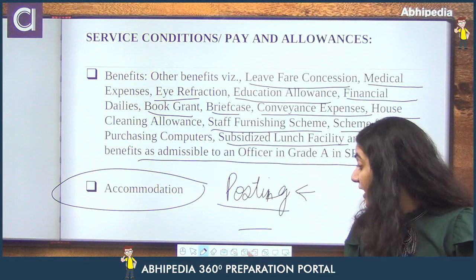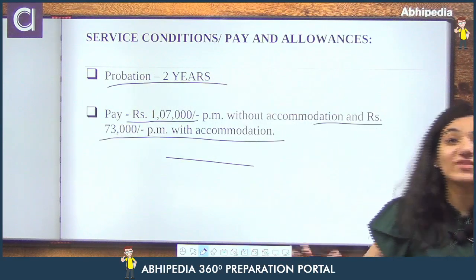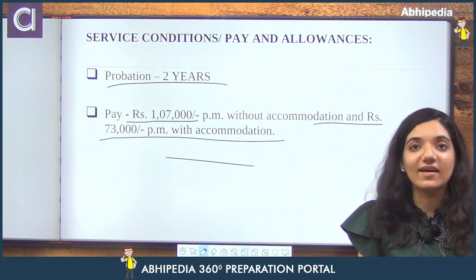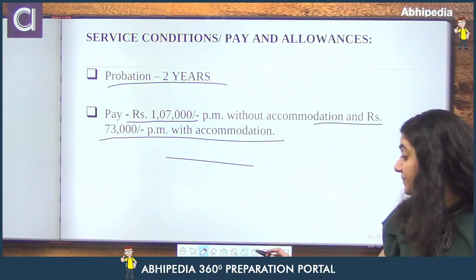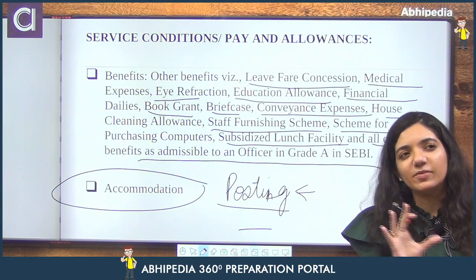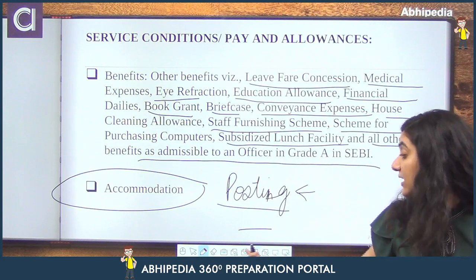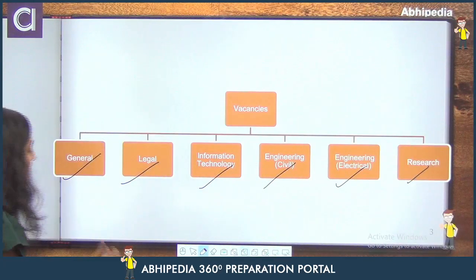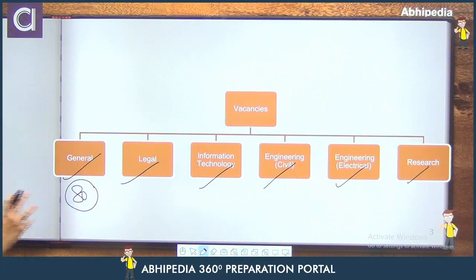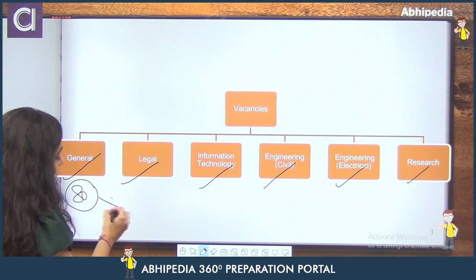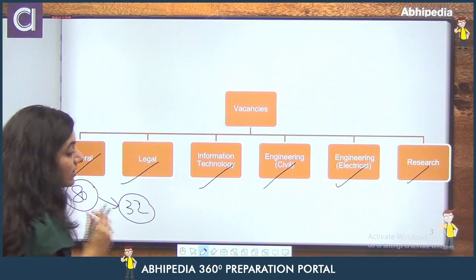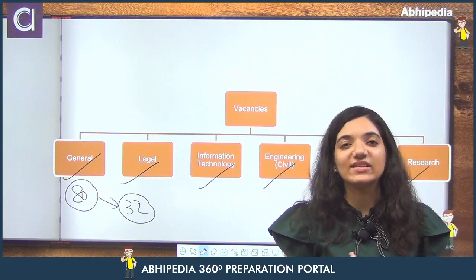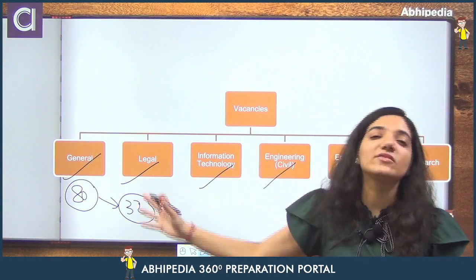Ek position ki to baat hai hi, uske saath saath iska pay scale bhi itna acha hai that gives another level of boosting ki iske liye prepare karna banta hai. Pichli baar roughly 80 general ke andar inki positions aayi thi — the vacancies in terms of the general stream was 80. Aur agar hum general category ki baat karte hain, uske paas 32 vacancies thi. No doubt number of vacancies kam hai lekin yeh job kuch aisi hai, iska jo strength hai woh itna zyada hai that this is worth trying.